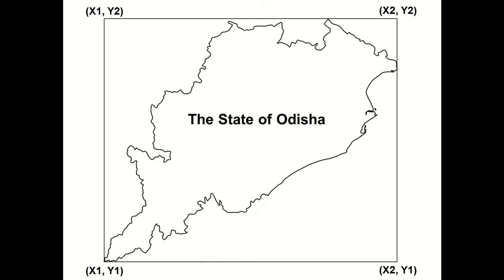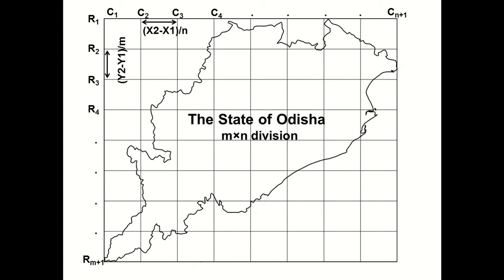You can use any rough sheet or paper. First, you need to find a blank map of Odisha. Here, x1 and y1 are the maximum values of latitude and longitude respectively, and x2 and y2 are the minimum values of latitude and longitude. First, design a bounding box using those coordinates such that this rectangular box contains the whole region of Odisha. Then divide this region into an m cross n square grid.